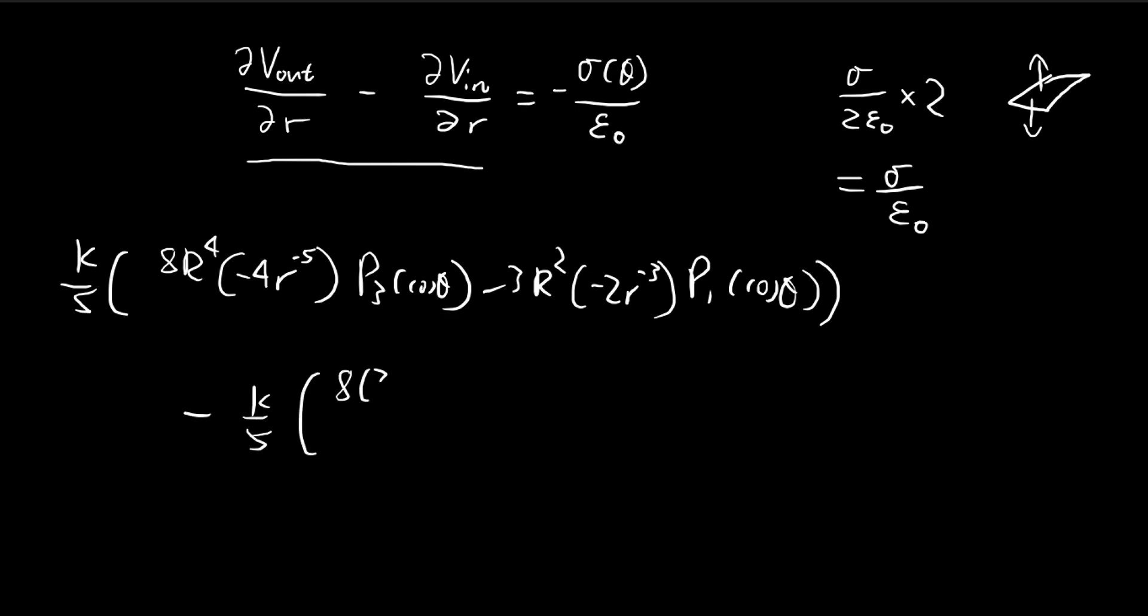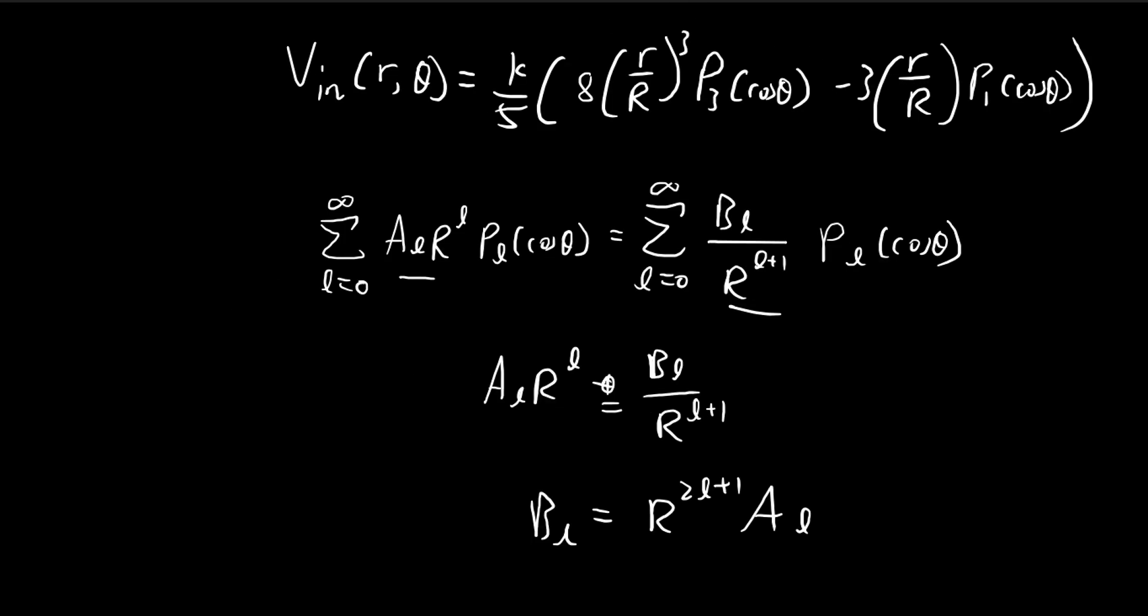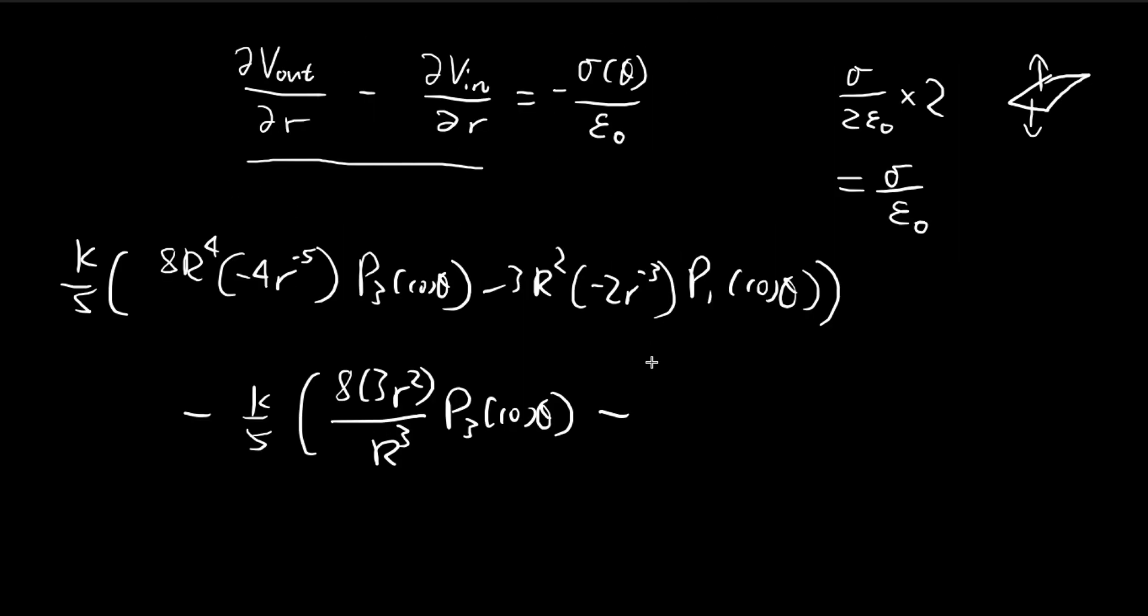So 8, 3R squared, 3, and then for the other one, there's just one R. So you can just get rid of the R. And this is going to be equal to this.